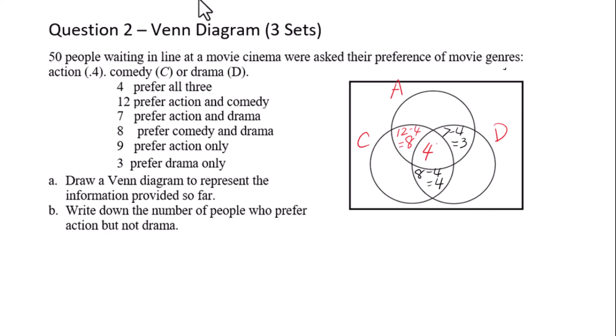9 prefer action only, so we place 9 there. 3 prefer drama only, so we place 3 there. The universal set contains 50 people.